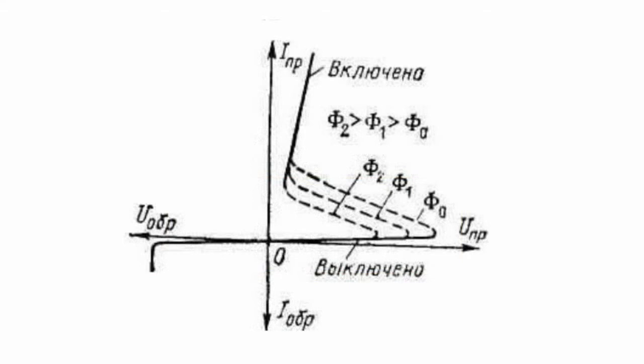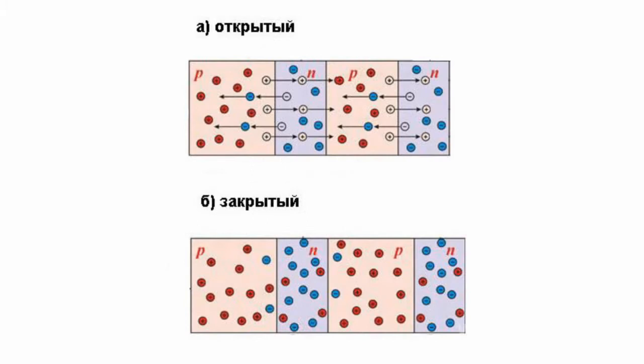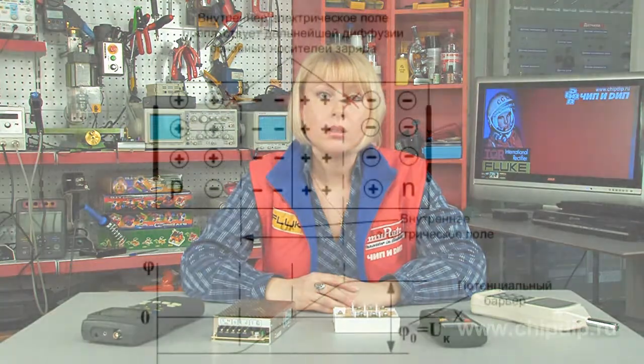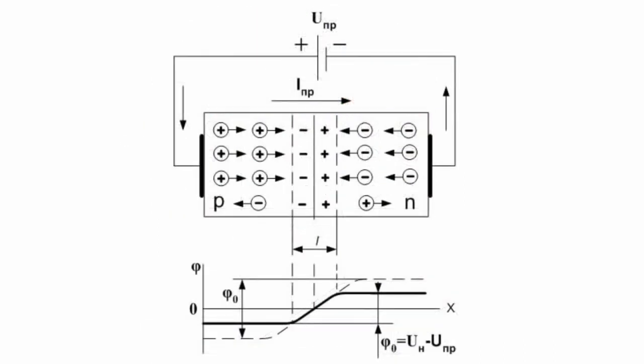Photothyristor operating principle is based on carrier generation in a semiconductor. If the anode has a positive voltage in comparison with the cathode, the outside junction will be forward biased and the medium junction will be reverse biased in dark mode, and the photothyristor will be closed. The electron-hole pair is generated in a thin base when the junction is illuminated, resulting in avalanche multiplication of charge carriers and switching on of the photothyristor.